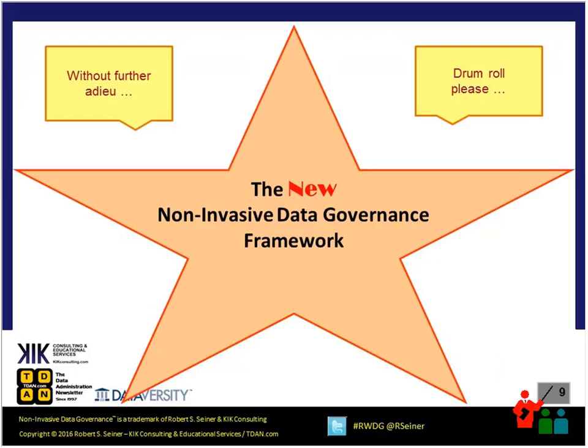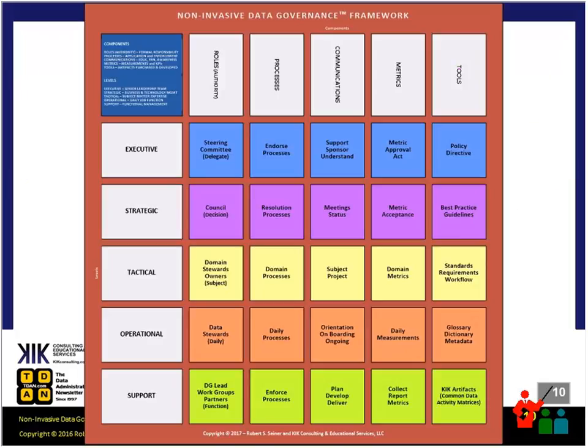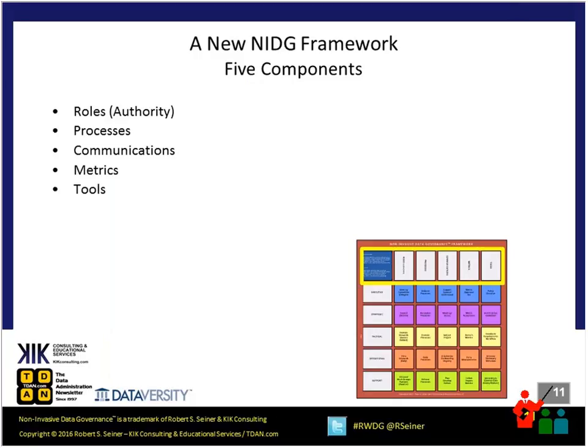Without further ado, I want to share what I'm calling the new non-invasive data governance framework. The framework consists of five rows and five columns. We're going to go through each row and column in detail, and I'll point you to where there's more information about it. If you have a printer close by, you might want to print off this framework and refer to it throughout the webinar. This is the primary look at the new non-invasive data governance framework, and we're going to dissect it so you understand what it covers.